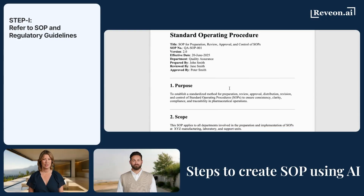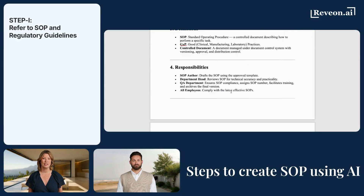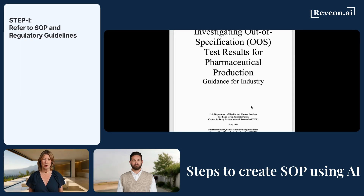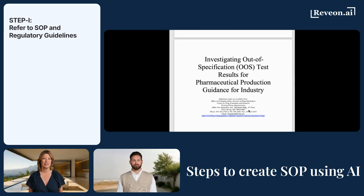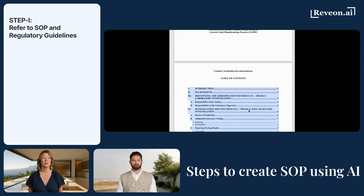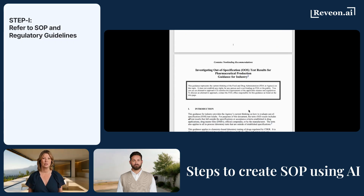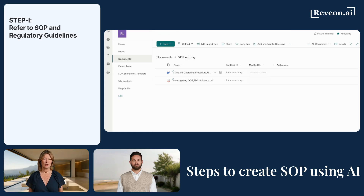Let's break this down step by step. First, keep a copy of your company's SOP writing guideline in SharePoint. Also, if you're referring to external regulatory guidelines like ICH Q10 or 21 CFR 211, you can upload and reference them in your prompt. This gives the AI proper context using a method called RAG, or Retrieval Augmented Generation. It helps the AI align the output with the actual regulatory language.